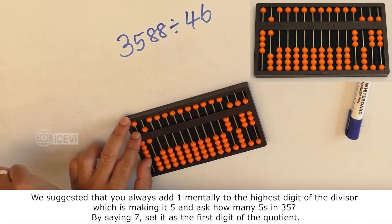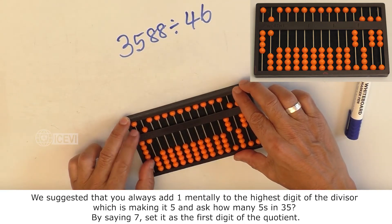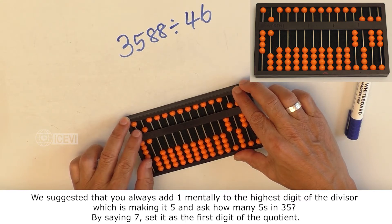We suggested that you always add 1 mentally to the highest digit of the divisor, which is making it 5, and ask how many fives in 35?